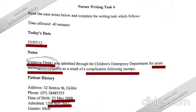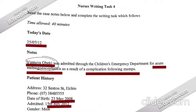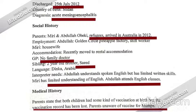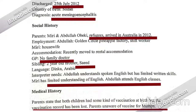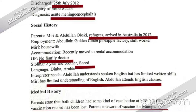Patient's address is 32 Sexton Street, Epping, and the phone number is given. Date of birth: 23 May 2008. Admitted: 15th July 2012. Gender: male. Discharged: 25th July 2012. Country of birth: Sudan. Diagnosis: acute meningitis encephalitis. Social history: parents Mary and Abdullah Obiki are refugees who arrived in Australia in 2012. Abdullah works at a Golden Circle apple factory as a shift worker; Mary is a housewife. They recently moved to rental accommodation and do not have a family doctor.